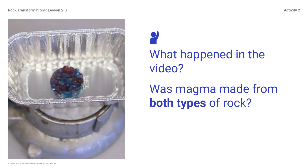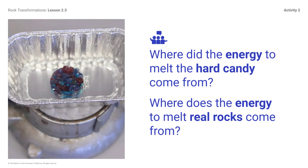What happened in the video? The whole candies and the crushed candies both melted. Was magma made from both types of rock? Yes. Both igneous and sedimentary rocks can form magma. Where did the energy to melt the hard candy come from? Heat from the hot plate. Where does the energy to melt rocks come from? Heat from the earth's interior. One reason we use hard candy instead of real rock is because hard candy melts at a much lower temperature than actual rock material, so we were actually able to melt it. We would not be able to produce the high temperature at which rock melts deep in the earth.